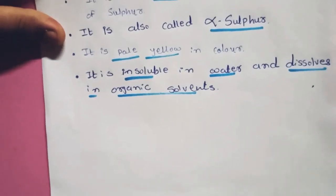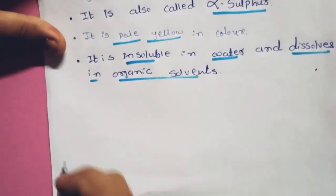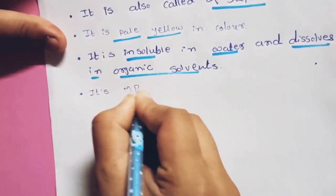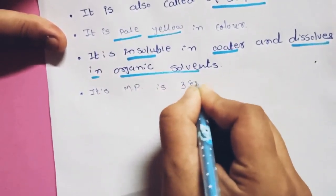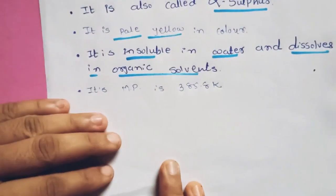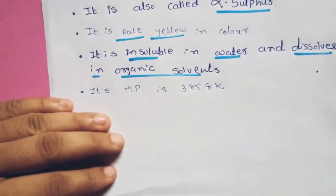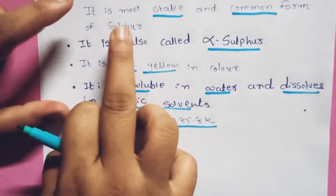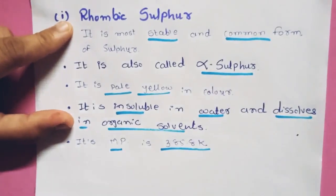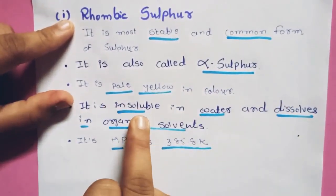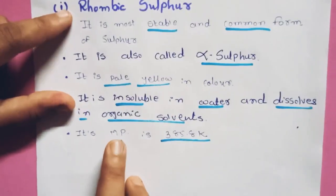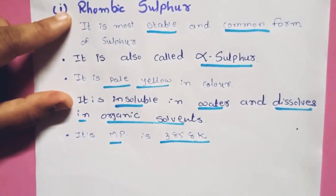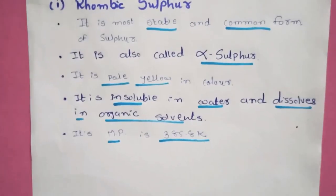The melting point of rhombic sulfur is 385.8 Kelvin. So the main properties to remember: rhombic sulfur is also called alpha sulfur, it is insoluble in water, soluble in organic solvents, pale yellow in color, and its melting point is 385.8 Kelvin.